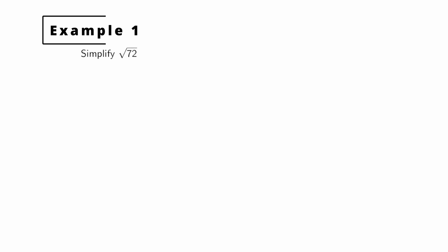We begin with a simple example. To simplify the square root of 72, it will be simplified when there are no factors under the radical that are perfect squares. Looking at the prime factorization of 72, we can write it as 36 times 2, and of course 36 is 6 squared.